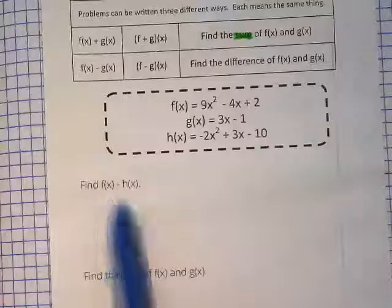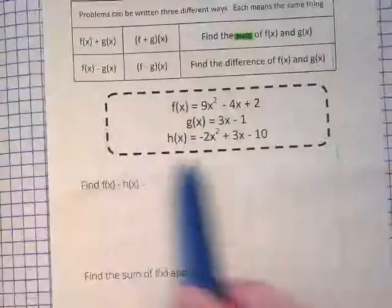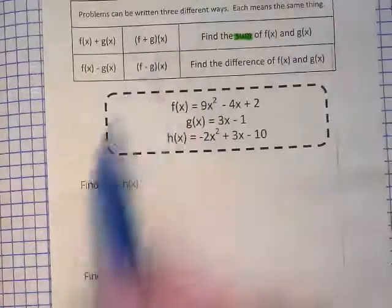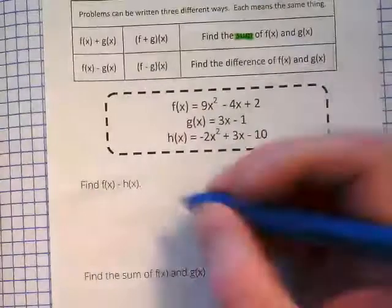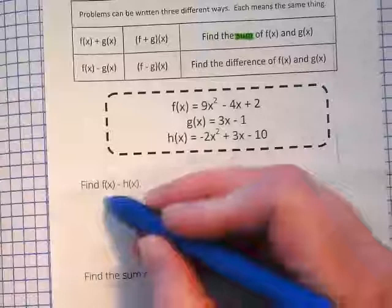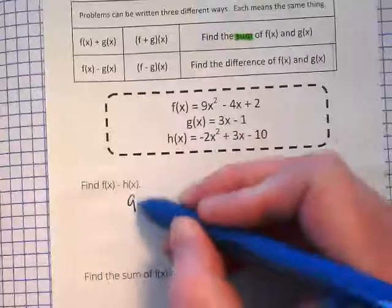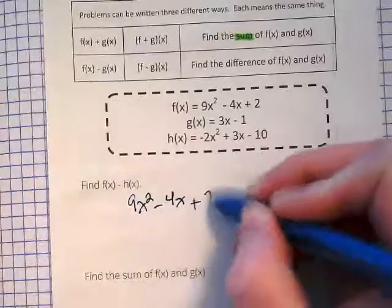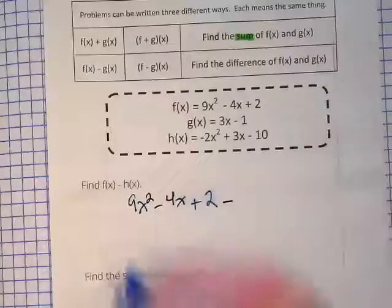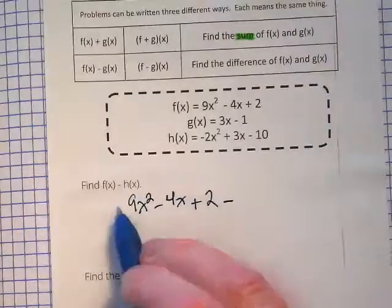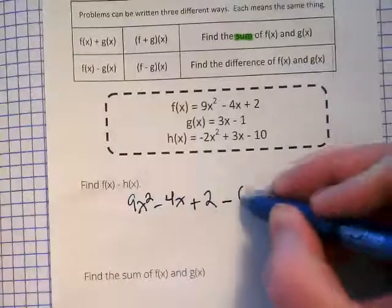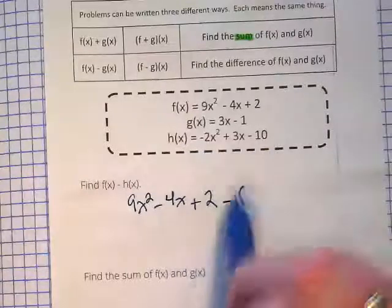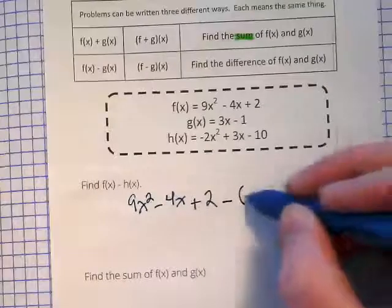So if we have f of x minus h of x, we're using these here, and we're going to write them as f of x is 9x squared minus 4x plus 2 minus h of x, and we're going to put this in parentheses to keep it what it is here with the subtraction sign in front of it.